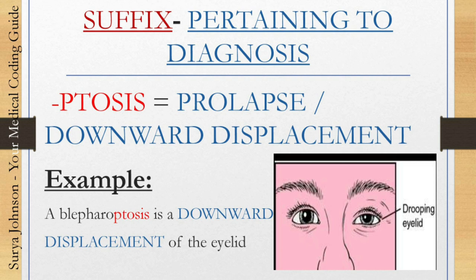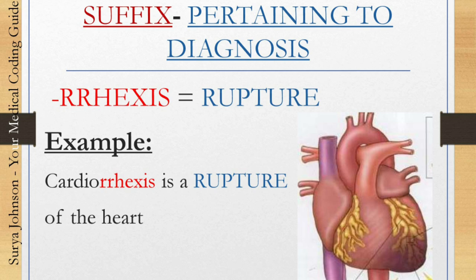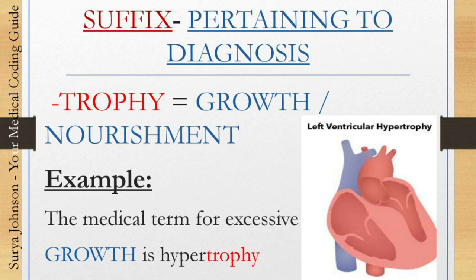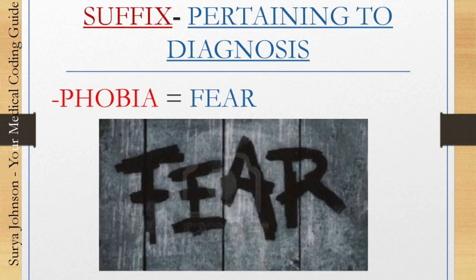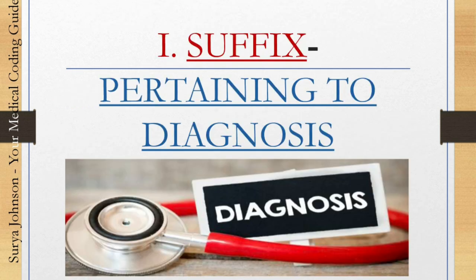The next one, '-rrhexis,' means rupture. For example, cardiorrhexis means rupture of the heart. The next suffix pertaining to diagnosis is '-trophy,' which means growth or nourishment. For example, the medical term for excessive growth is hypertrophy. The next one, '-phobia,' means fear — you already know that one. For example, hydrophobia is the fear of water. That covers all the suffixes pertaining to diagnosis.